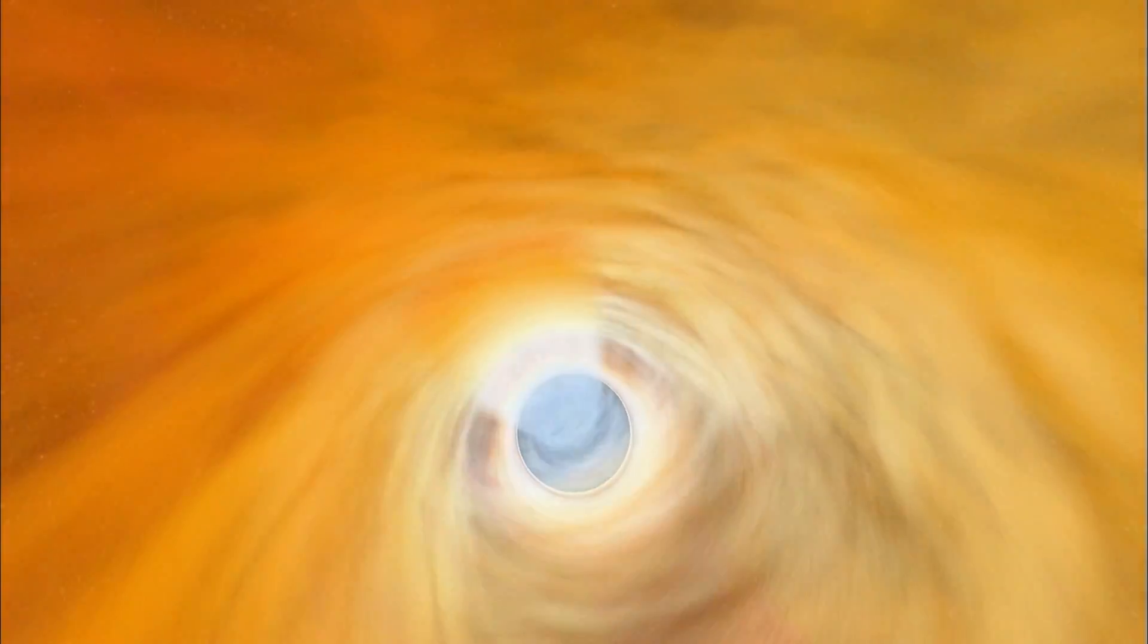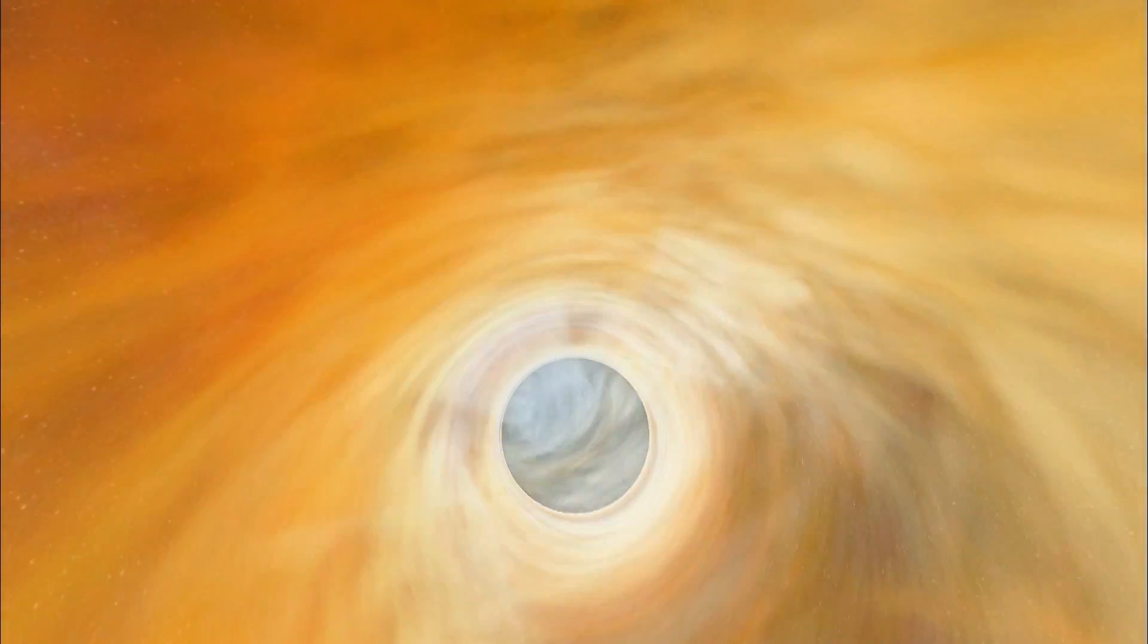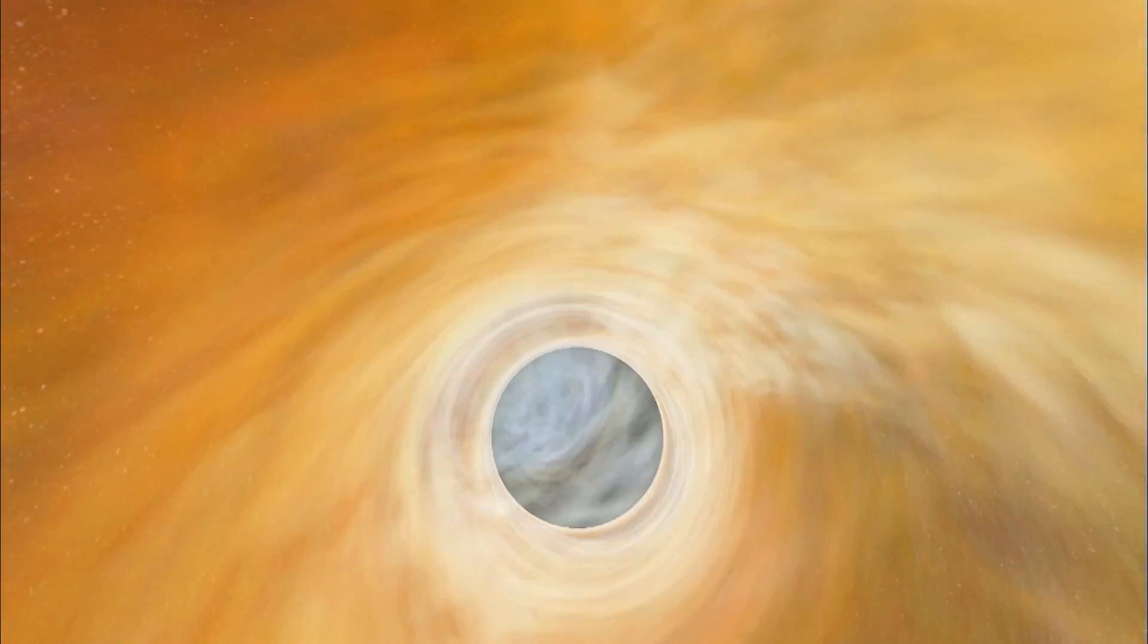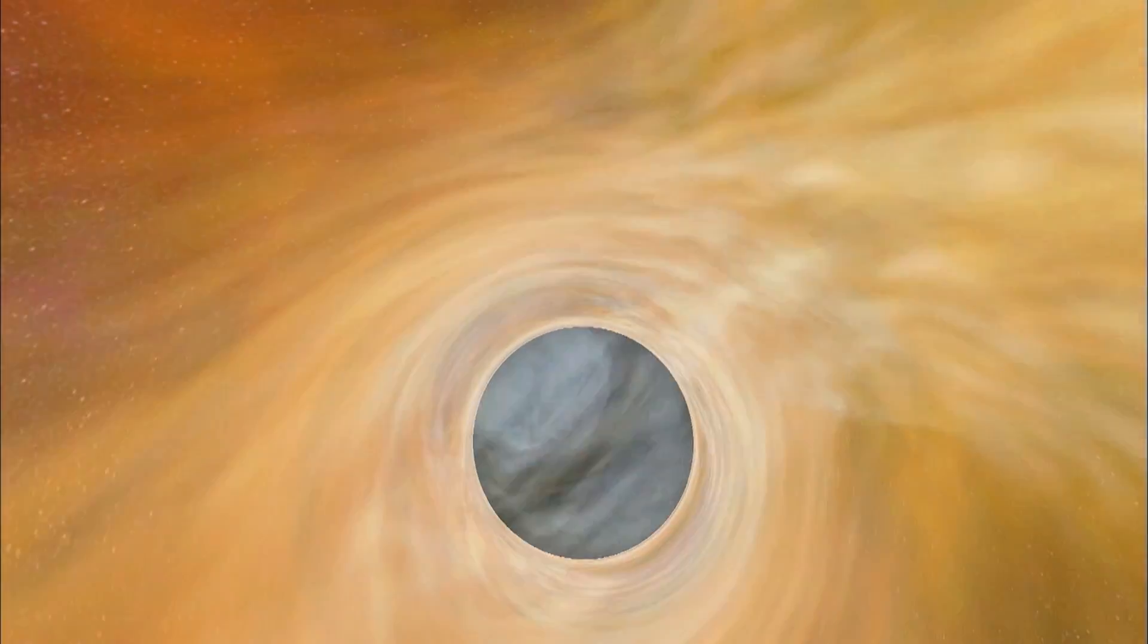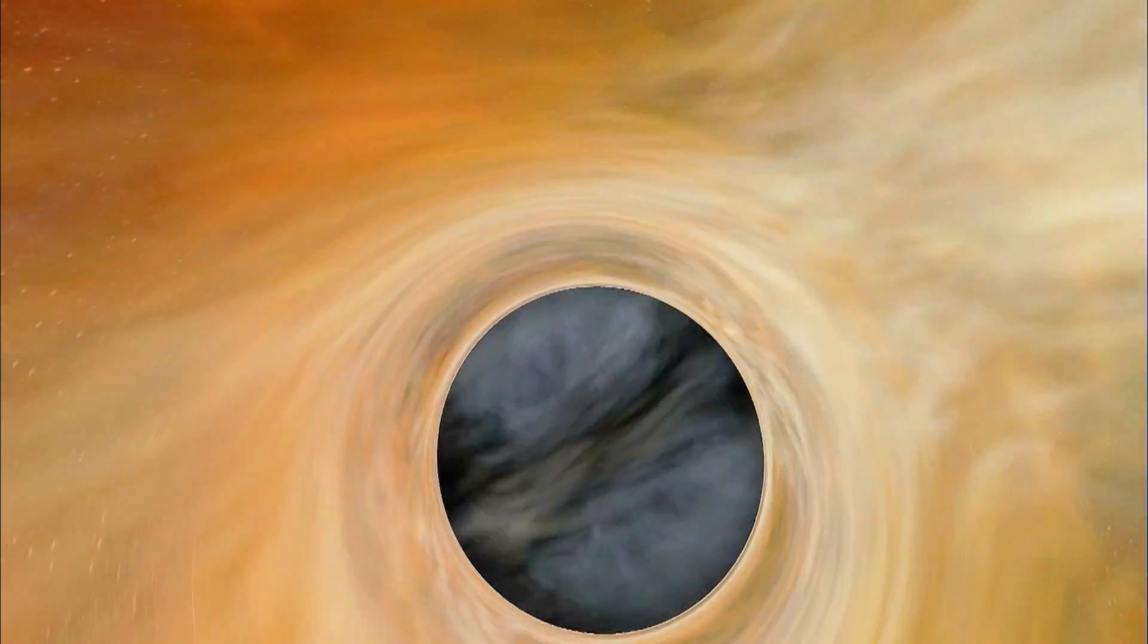A black hole is gravity taken to the extreme. Its mass is literally packed into a point and enshrouded within a dark sphere called the Event Horizon. That sphere is the point of no return.